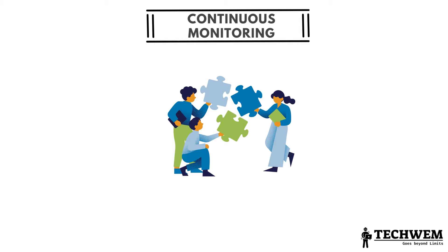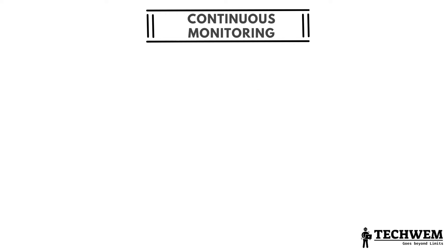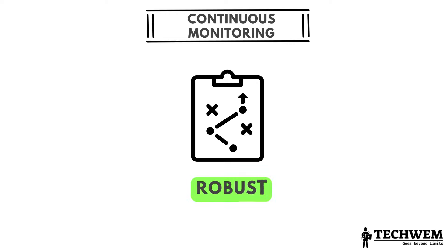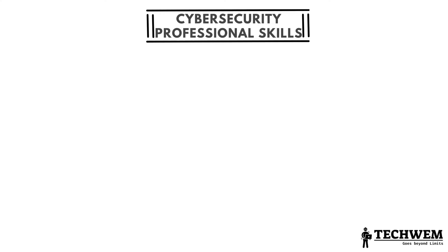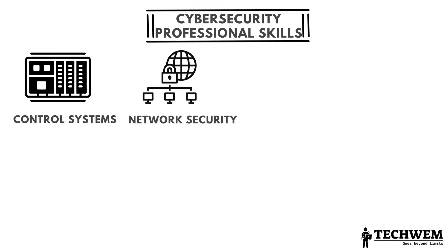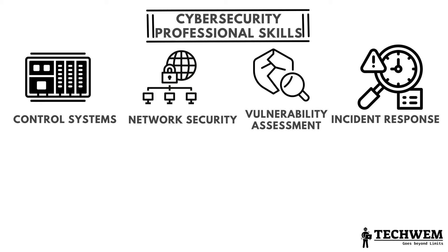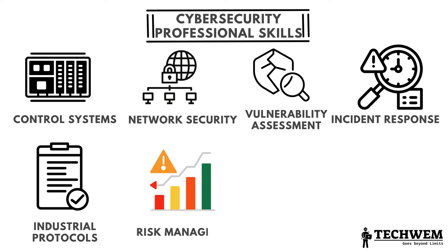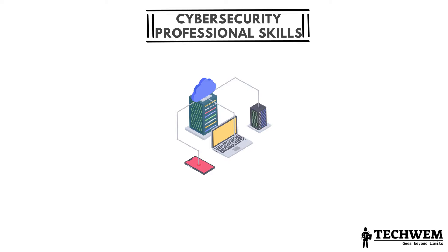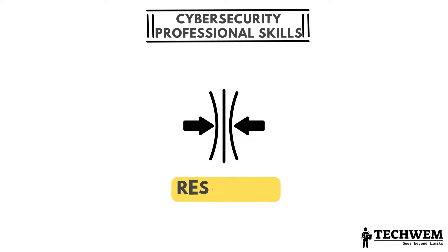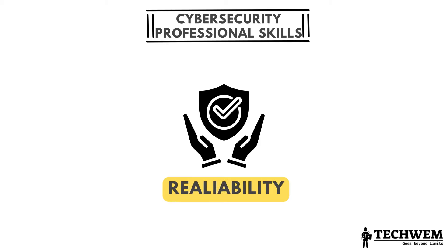By following these key steps, organizations can establish a strong foundation for OT cybersecurity. Together, these steps contribute to a proactive and robust OT cybersecurity strategy. OT cybersecurity professionals should possess skills in control systems, network security, vulnerability assessment, incident response, knowledge of industrial protocols, risk management and familiarity with relevant compliance standards. These skills are essential in safeguarding critical infrastructure systems and ensuring the resilience and reliability of operational technology environments.